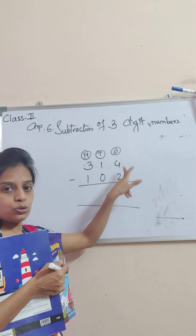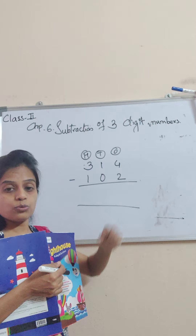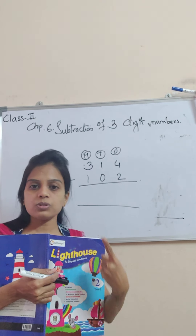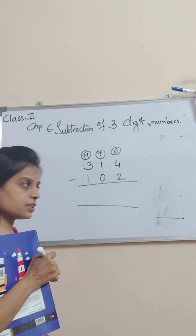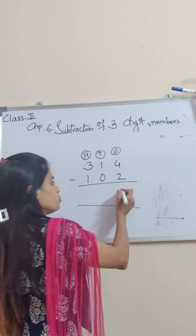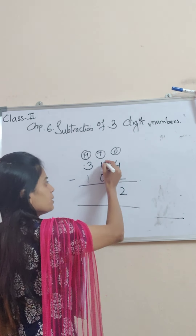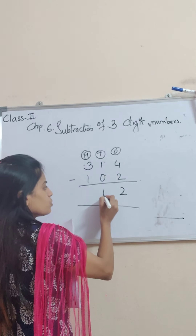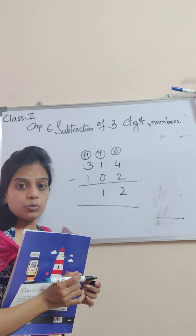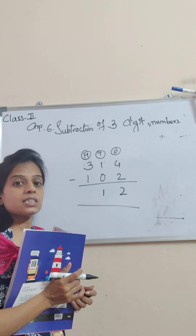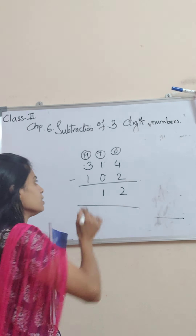Now, 4 minus 2. After 2, count till 4: 3, 4. How many fingers? 2. Now, 1 minus 0 is 1. When you subtract any number with 0, the answer is the same number.